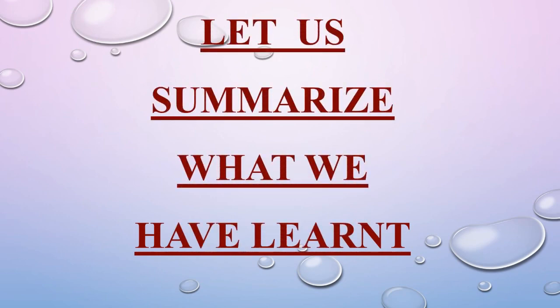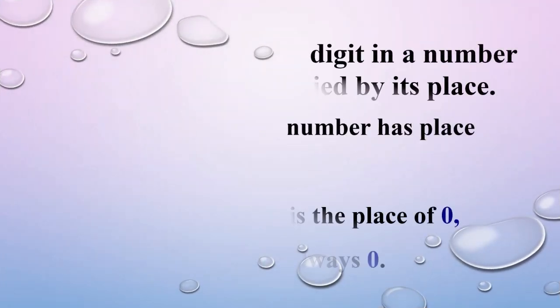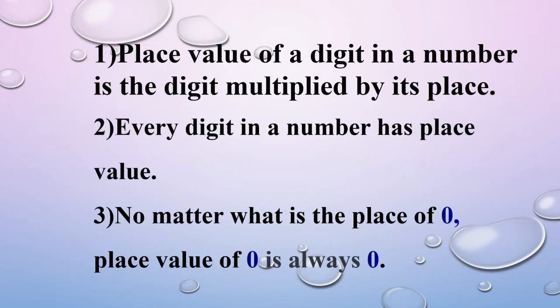Let us summarize what we have learned. First, the place value of a digit in a number is the digit multiplied by its place. Second, every digit in a number has a place value. Third, no matter what is the place of 0, the place value of 0 is always 0.